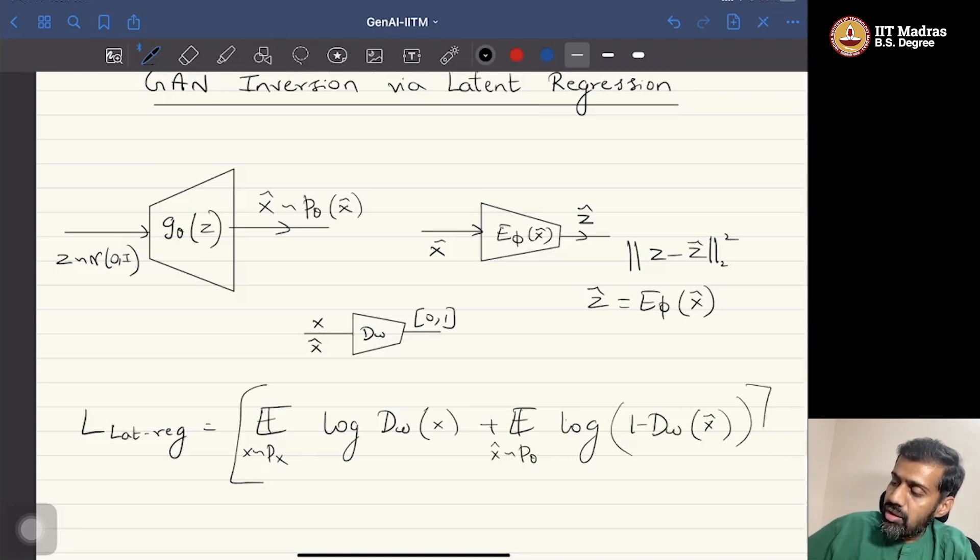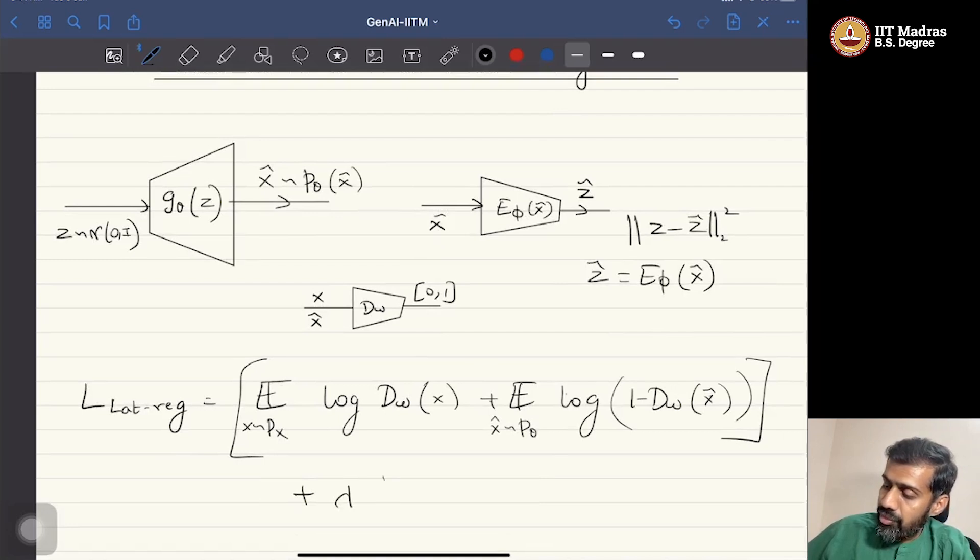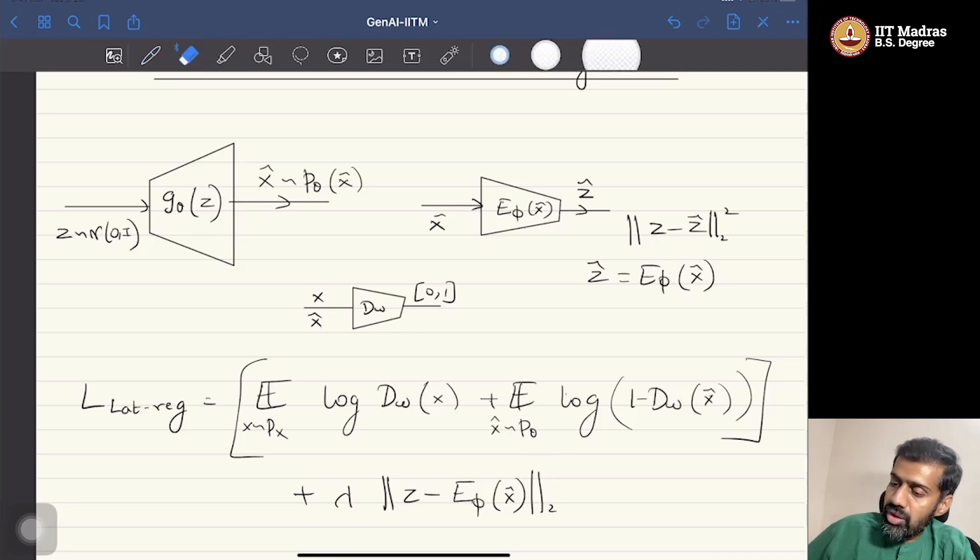So just add one more term here. Sometimes lambda times Z minus Z cap, which is E_φ of X cap. So just take the norm squared between the difference of the input vector that has generated a particular data point, and this expectation is over all generated data points.